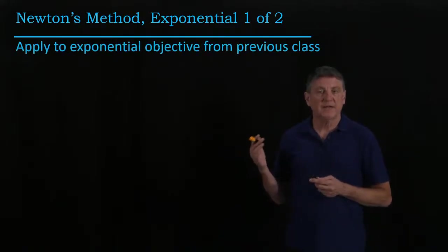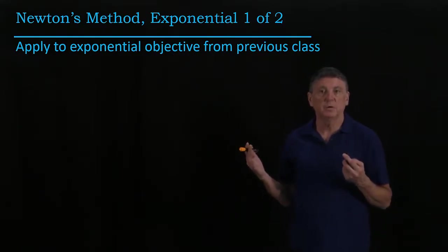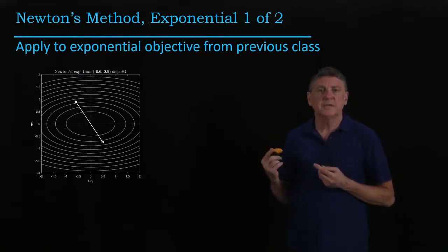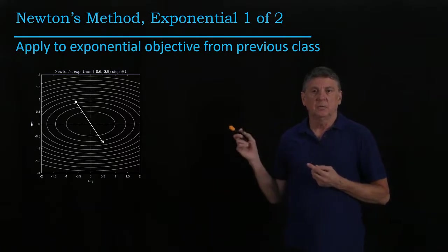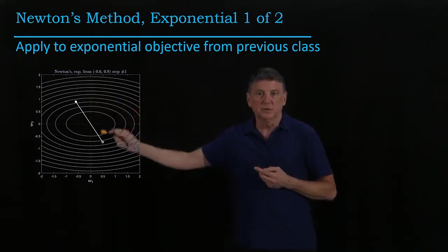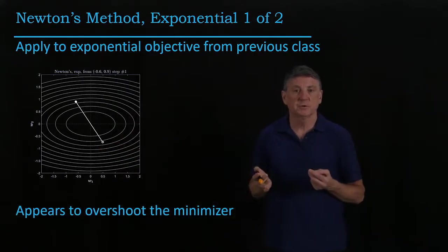Let's first take a look at the Newton's method that we already have calculated and we'll apply it to our exponential objective. Here what we see is that Newton's method will take one large step from our estimate to the opposite side and it appears to overshoot the minimizer.